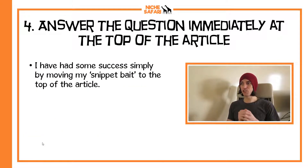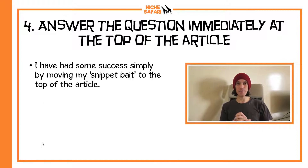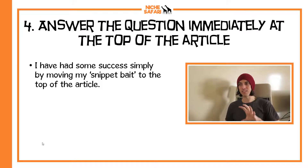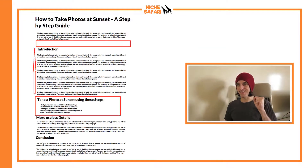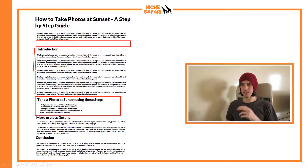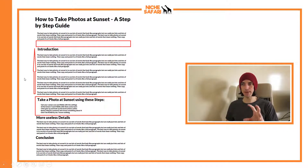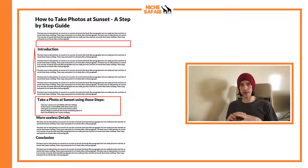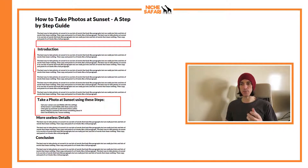Tip four: answer the question immediately at the top of the article. Winning the snippet is not easy and you're never going to be 100% successful. But one strategy I've had a little success with is simply moving the snippet bait to the top of the article. Say your article is 'How to Take Photos at Sunset' and you've got your bullet list snippet bait further down — if you move that snippet bait toward the top of the page, sometimes Google will take it. Again, I've used a keyword-optimized H2 header directly above the content I want Google to use for the snippet.